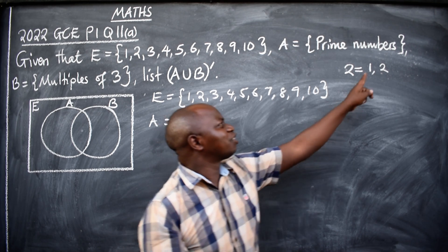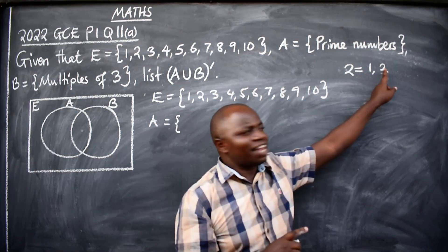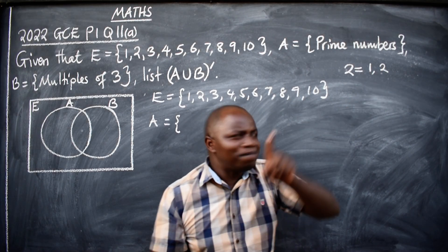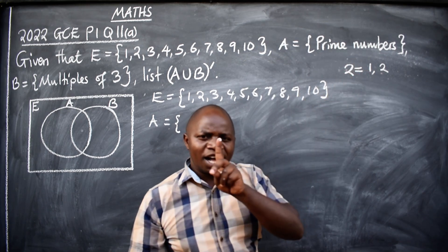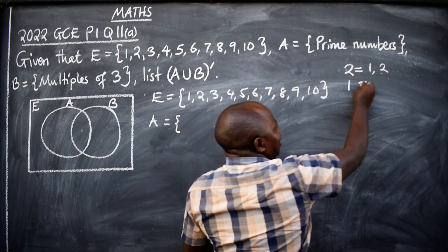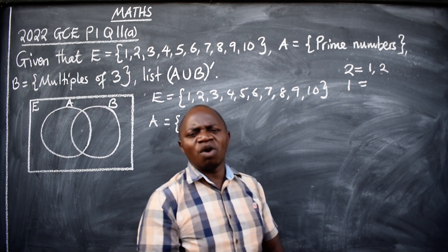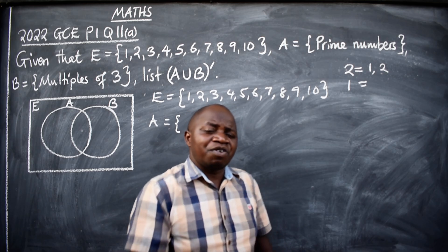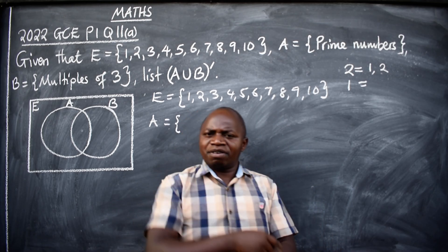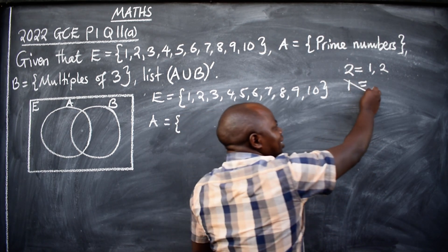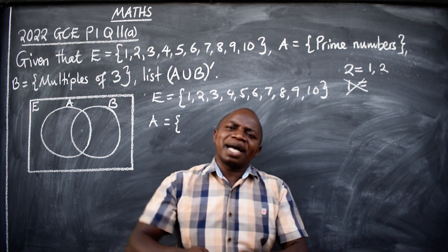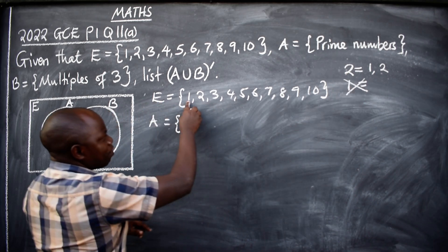Yes, two is a prime number. Why? It has got two factors — one and the number itself. So the first prime number is two, not one. What are the factors of one? Just one. For a number to be prime, it should have one and a different number — itself. So one is not a prime number. The first prime number is two.